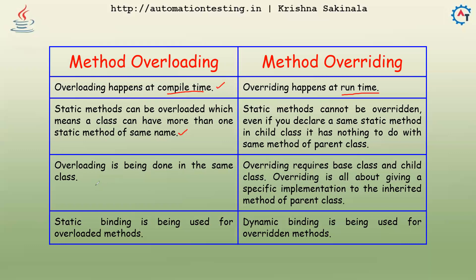Overloading is done in the same class — multiple methods with the same name but different arguments. It will be in the same class. But if you want to achieve overriding, it requires two classes: a base class and a child class.